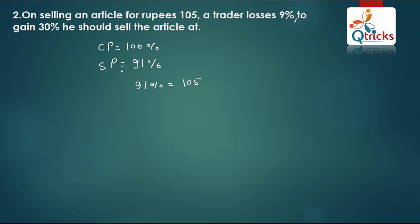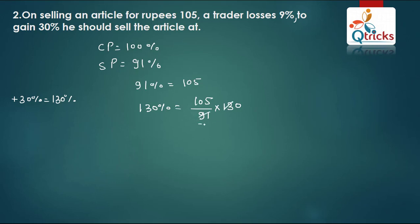We need to find the selling price for 30% gain. 30% gain means SP is 130%. So directly apply unitary method: 105 ÷ 91 × 130. Since 7 × 13 = 91 and 7 × 15 = 105, we can cancel: the answer is 150. So Rs. 150 is the selling price when you want 30% profit.